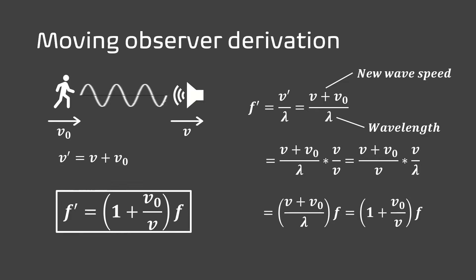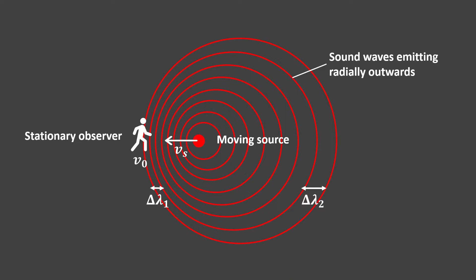Now if the source is moving instead, the spacing between the waves will change, leading to a change in the measured wavelength. If the source moves towards the observer, the wavelength decreases. The opposite is true of a receding source. The speed of the sound is constant throughout, therefore the frequency will change.